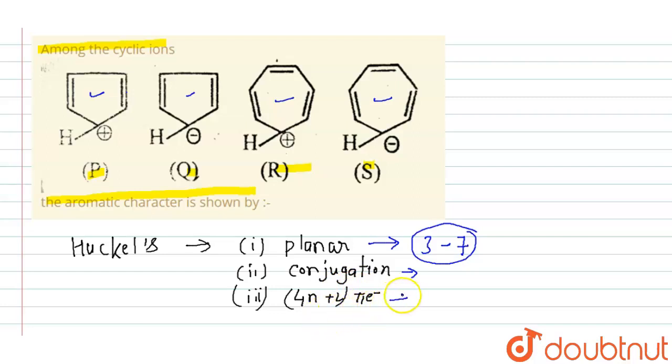Now coming to 4n plus 2 pi electrons. Put the value of n equals 0, it will be 2 pi electrons. Put n equals 1, it will have 6 pi electrons. And if we put n equals 2, it will have 10 pi electrons.